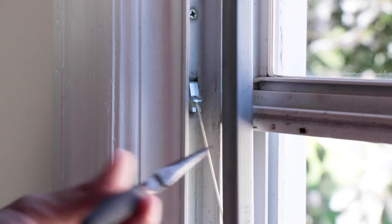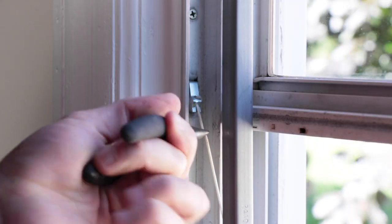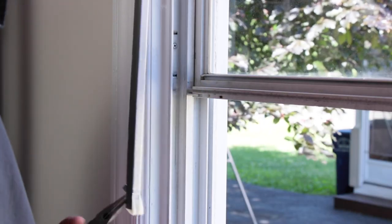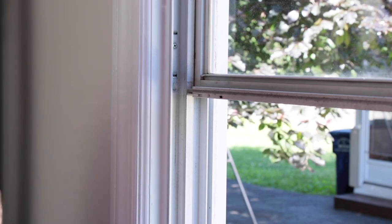Use pliers or vice grips to grab the cord and give the hook some slack. Remove the hook and ease it back into the pulley. Keep tension on the cord and hook during this process.